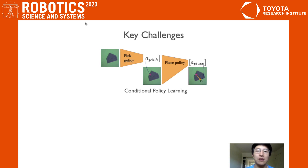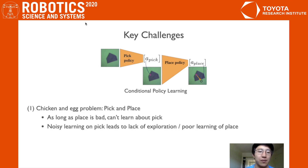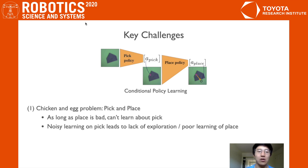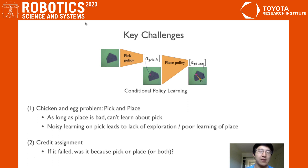However, jointly optimizing these two policies using standard RL can introduce a few key challenges. The first is the chicken and egg problem: at initialization, both policies are bad. If you need to learn a good place policy, you need good pick-points, and vice versa. This can result in mode collapse, or bad exploration due to noisy learning. The second issue is credit assignment — if the agent fails, what went wrong? Was it a bad pick-point, a bad place-point, or both? It's unclear.